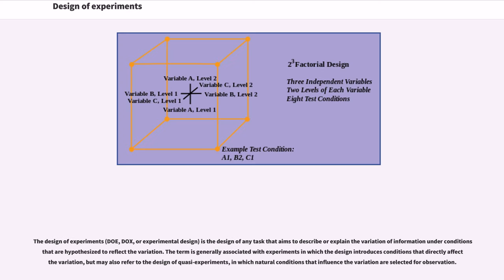Design of Experiments, DOE, DOCS, or experimental design, is the design of any task that aims to describe or explain the variation of information under conditions that are hypothesized to reflect the variation. The term is generally associated with experiments in which the design introduces conditions that directly affect variation, but may also refer to the design of quasi-experiments, in which natural conditions that influence the variation are selected for observation.